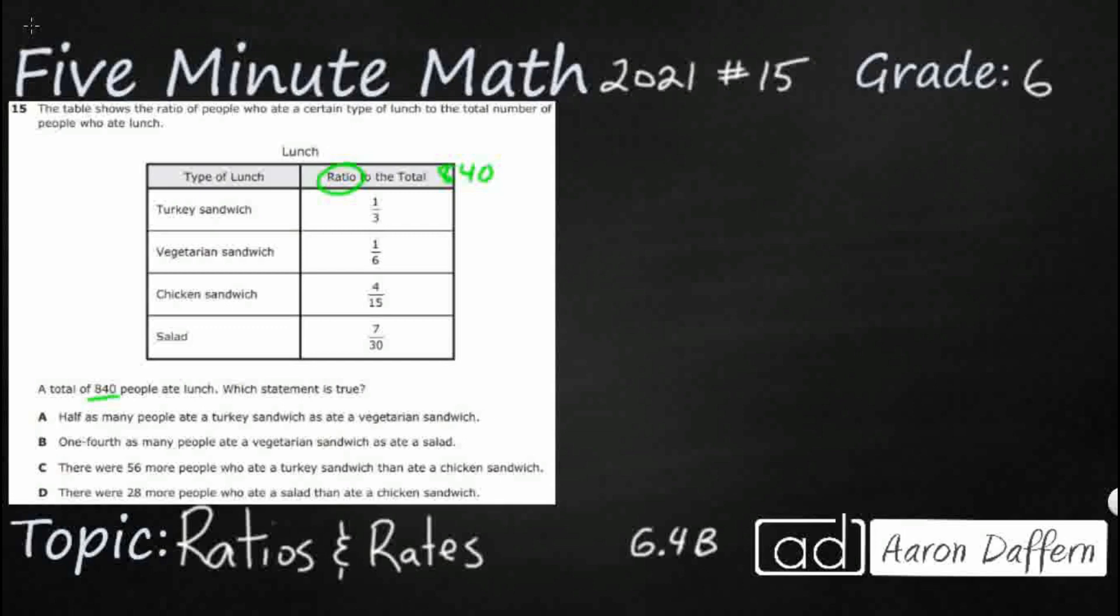So we need to figure this out as a ratio, one-third of our total of 840. And when we think of one-third of 840, whenever we see that 'of', that gives us a clue that we need to multiply. So one-third times 840.